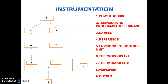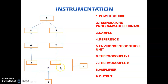This is the block diagram of differential thermal analysis. This is the power source; it is connected to a temperature programmable furnace. This is the sample holder, which consists of the sample and reference holder, consisting of thermocouple number one and thermocouple two. Both are connected to amplifiers, which are then connected to the output. The function of the power source is to produce or provide power for the instrument. Using this power, the temperature programmable furnace provides heat for the instrument.